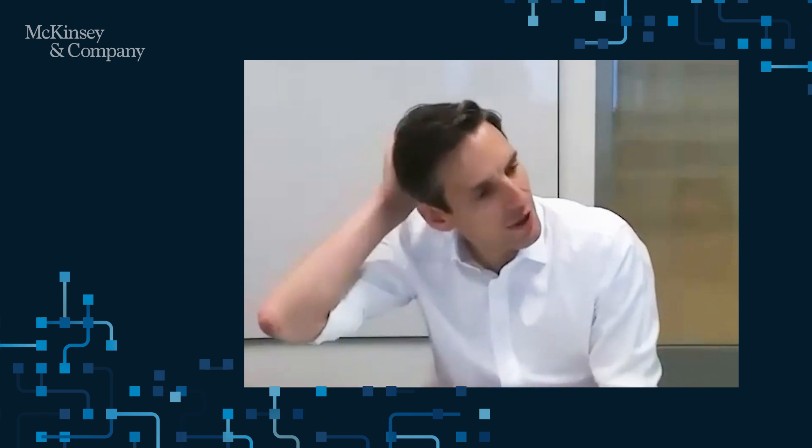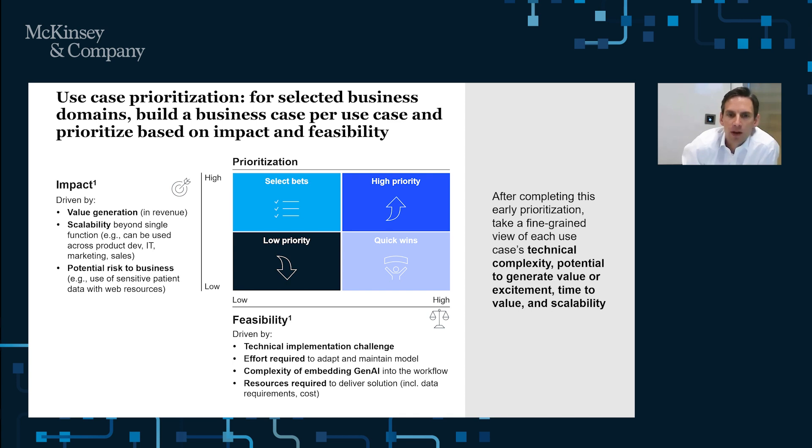Although the technology is relatively new, the approach to transformation is one that we've seen before and we're familiar with. There's two dimensions to it. The first is you identify the business domains and the use cases where this is going to create most value. It might be to improve your win rate and tendering, it might be to reduce accidents on site, it might be to improve engineering productivity—which use cases are going to create real business value?